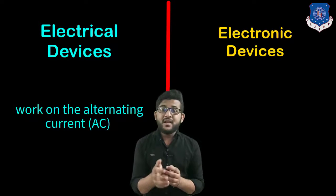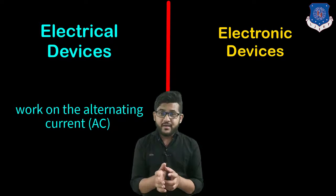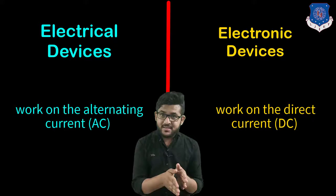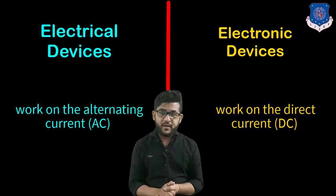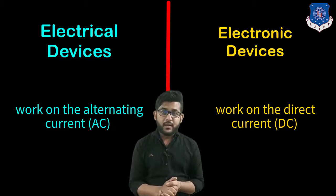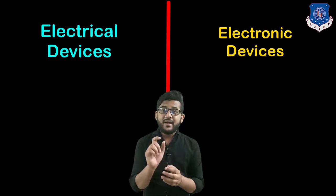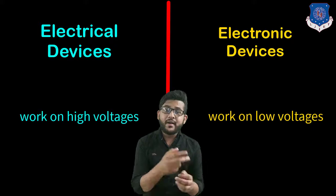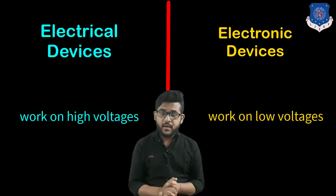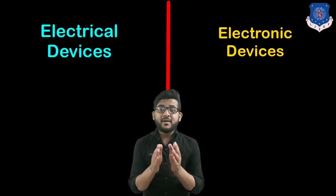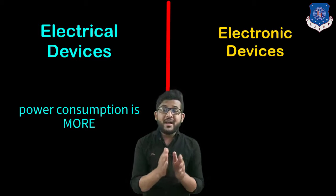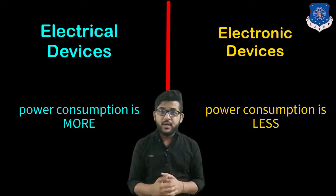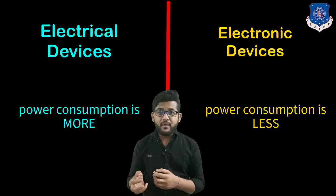Electrical devices mainly work on alternating current (AC), whereas electronic devices work on direct current (DC). Electrical devices work on high voltage, whereas electronic devices work on low voltage. The power consumption of electrical devices is more compared to electronic devices — electrical devices consume more power and electronic devices consume less.